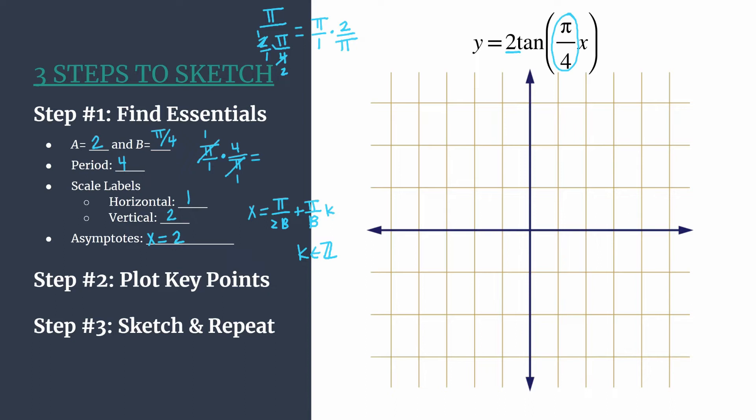And then the second part is plus pi over B k. Well, we already found pi over B above, pi over B is just the period. So we can go ahead and say plus four times k. Our asymptote happens once a period or every four units, and that's where k is an integer.